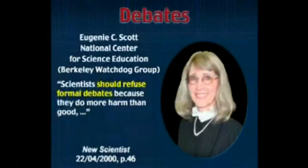He was a pushover — he had so much in print that he was in serious trouble when he started. When the press interviews evolutionists, they always have to interview Eugenia Scott, who is president of the National Center for Science Education. It sounds like a very prestigious organization, but it is just a watchdog group that hates the creationists — one she formed by herself. She says scientists should refuse formal debates because they do more harm than good. And they are doing that now — that is the standard procedure. They do do more harm than good for the evolutionists.